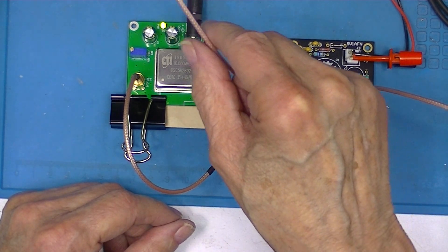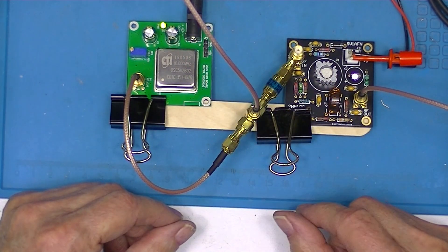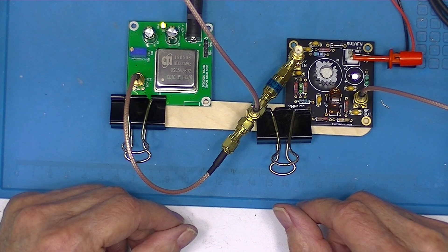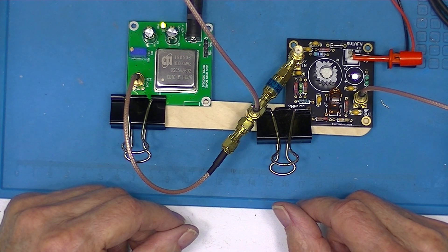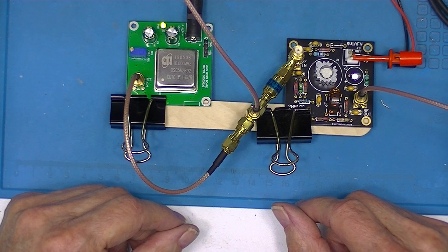This goes to the number one input on my oscilloscope, which is a yellow trace.